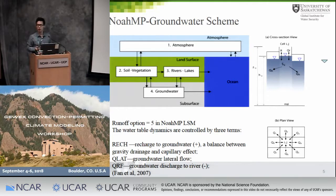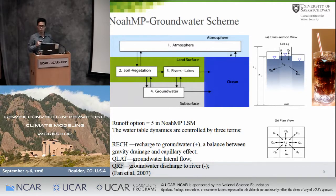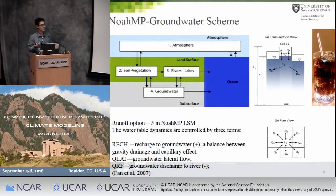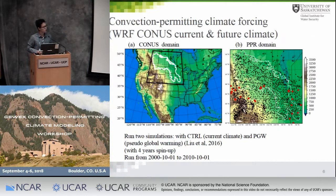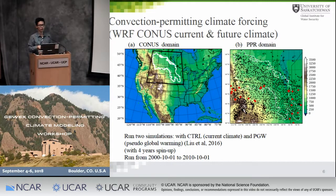Mike already introduced a lot about these groundwater modules. I'm using the same model but in NOAA MP. Think about drinking a coke from a straw — three terms combine here: the recharge term, the lateral flux, and the groundwater discharge to the water. If the flux is negative, it means water is being taken from the aquifer to the above soil layer — so the water level goes down but the flux goes up, and vice versa. I used forcing for the CONUS in the current climate as the control run and the future climate as the PGW. I ran these two sets of simulations for 10 years with four years of water table spin-up time.